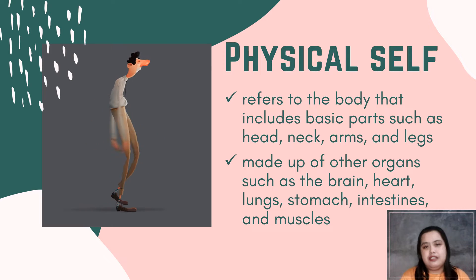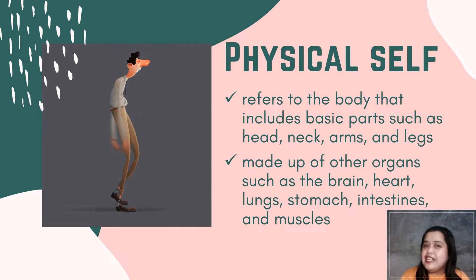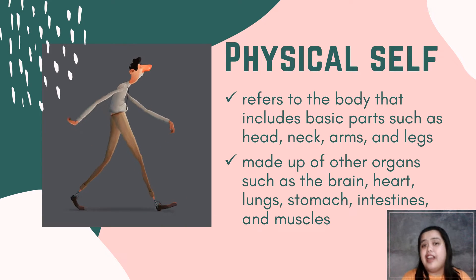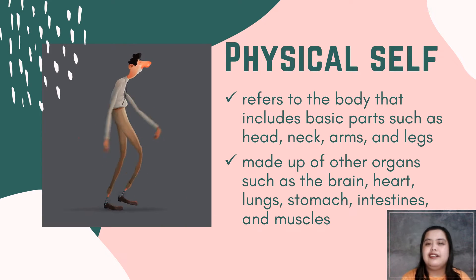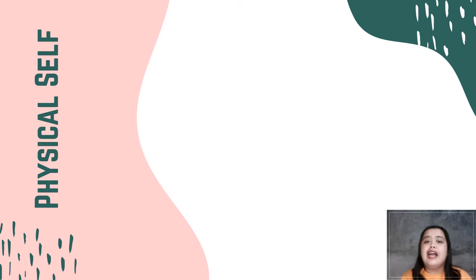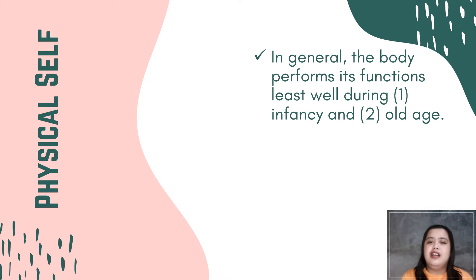These functions include breathing, walking, and dancing — all of them play an important role in our everyday life. So, the physical self is about the body, and the body's ability to perform its functions changes throughout the years. In general, the body performs its functions least well during infancy and old age — those two extremes.